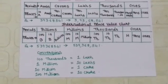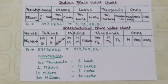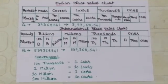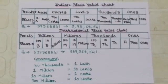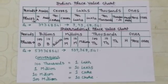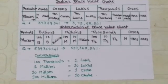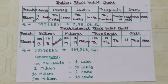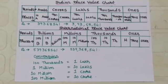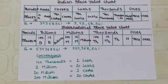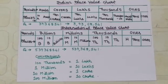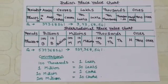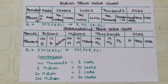Now, let us move on to systems of numeration. We have mainly two systems of numeration: the Indian system of numeration and the international system of numeration. When we are in our country, we follow our Indian system. When we go outside our country, we follow the international system. So let us learn these two systems with the help of the place value chart.